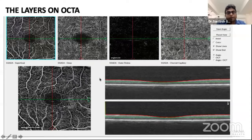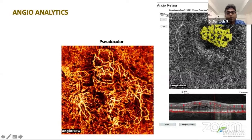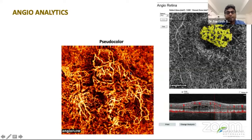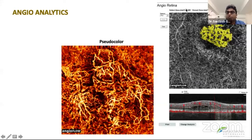Pseudocolor is extremely important in angioanalytics, wherein if you want to see what exactly is happening at the choroid level, especially the CC layer, when you put on the pseudocolor image you can see what's really happening at the choroid level. There's a clear contrast that is seen, and we can make out subtle CNVMs or vasculature at the level of the CC layer. We can even map these areas by adjusting the contrast as well as the flow area, putting dots around the lesion, measuring the selected area, and then serially following it up.